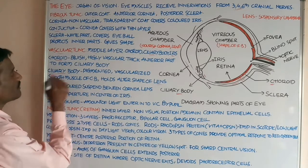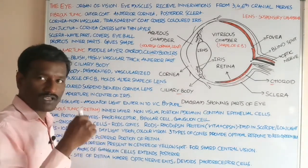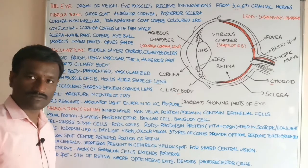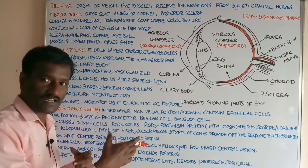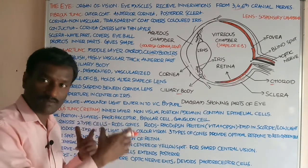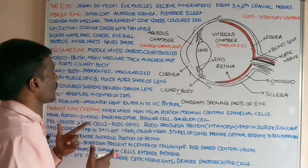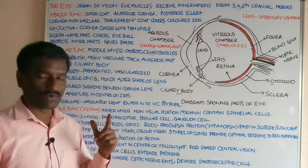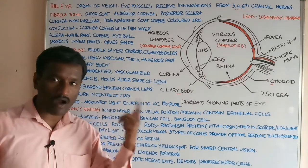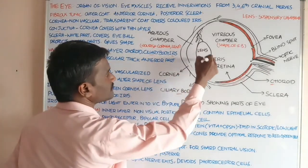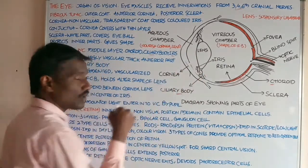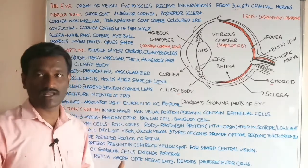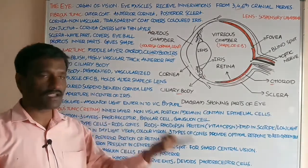The ciliary body is pigmented and vascularized. Smooth muscles associated with the ciliary body are called ciliary muscles. The smooth muscles of the ciliary body hold and alter the shape of the lens.